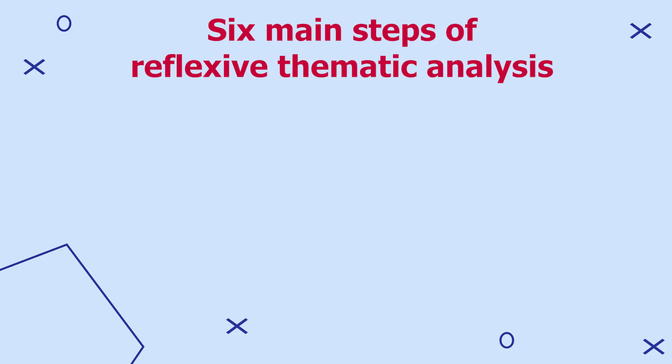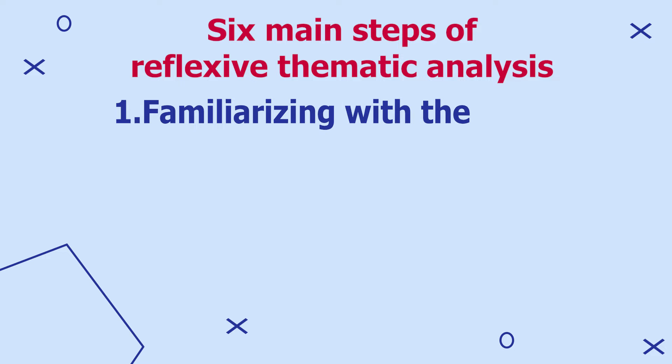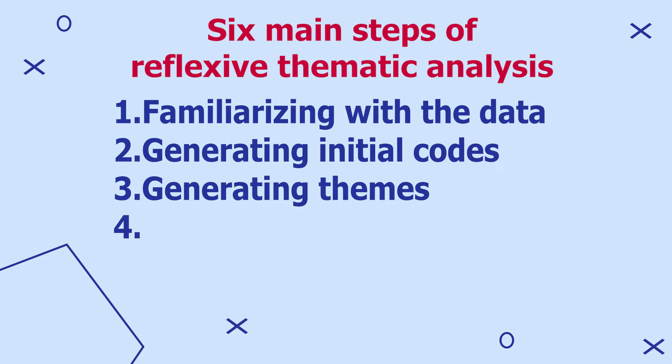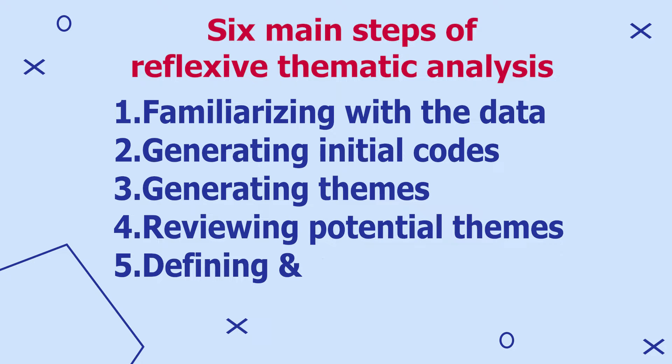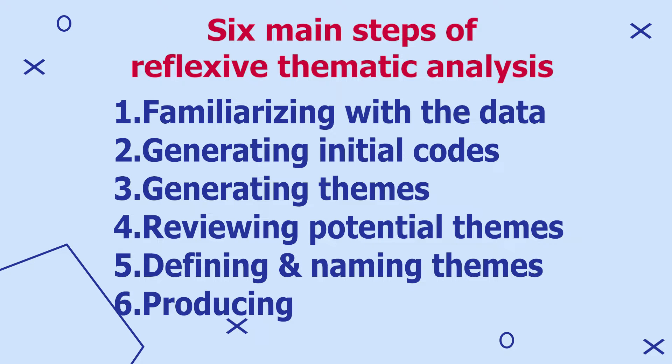The reflexive thematic analysis approach was popularized by Brown and Clark. It involves six major steps: one, familiarizing with the data; two, generating initial codes; three, generating themes; four, reviewing potential themes; five, defining and naming themes; and six, producing the report. Let's go through the steps together.